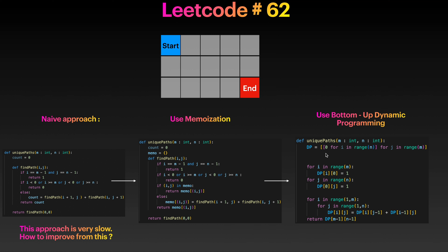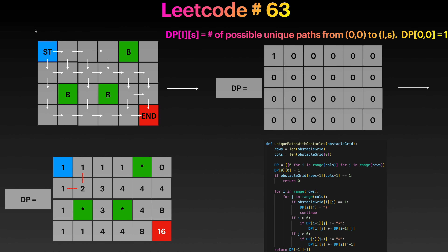You can also use the bottom-up approach. In this case we create a two-dimensional DP table and initialize it. We run our DP with i from 1 to m-1 and j from 1 to n-1, keep updating the table, and then return dp[m-1][n-1]. That's problem 62.